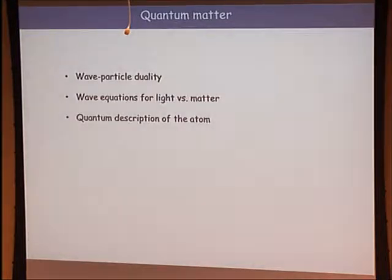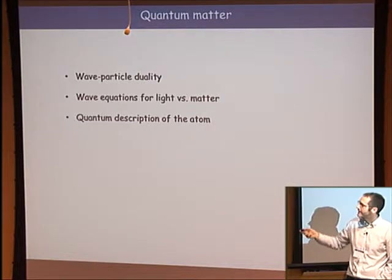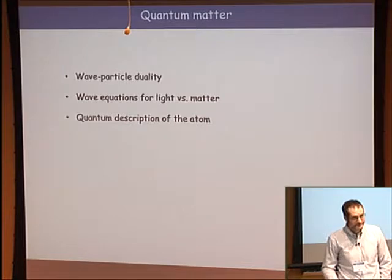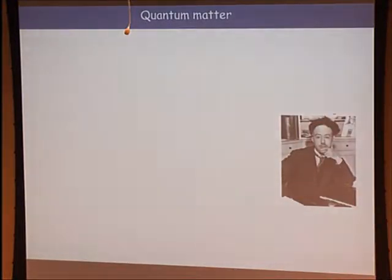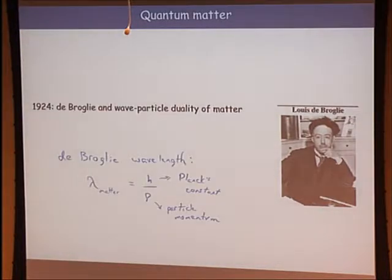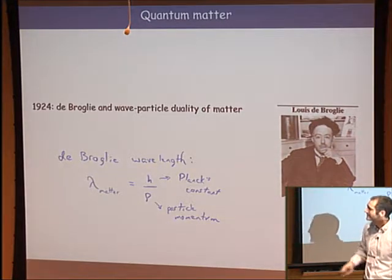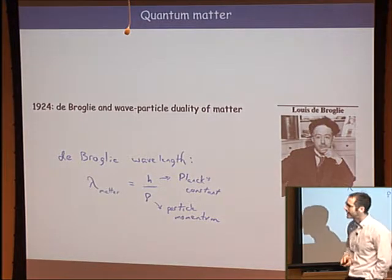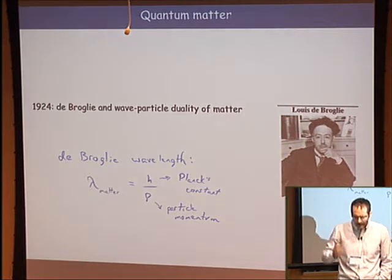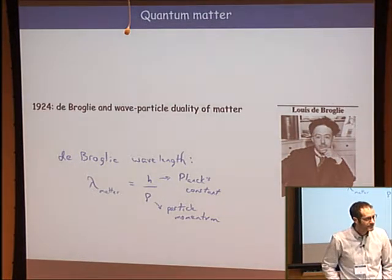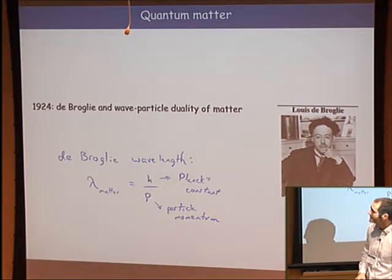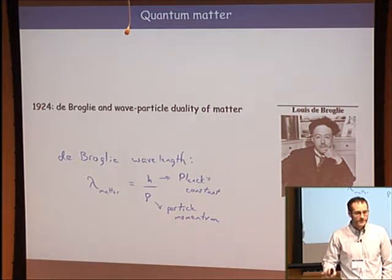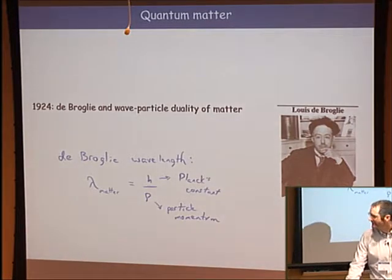Let's review quantum mechanics. You've probably heard about wave-particle duality. De Broglie wrote down that the wavelength of matter is Planck's constant divided by the momentum of the particle. If particles have wave-like properties, we'd expect phenomena like interference and diffraction, just as we see with light fields. That was his PhD thesis—setting the bar pretty high.